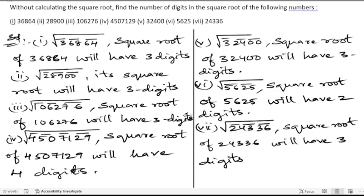It's very easy — just see how many bars you are getting. If you put three bars, three digits will be there; if you put four bars, four digits will be there. Remember to start from the end and put one bar for every two digits.